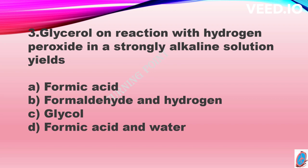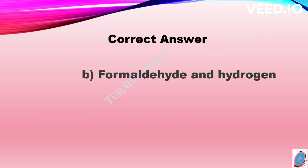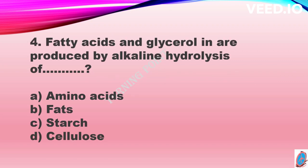Let's move on to the next question. Fatty acids and glycerol are produced by the alkaline hydrolysis of option A amino acids, option B fats, option C starch, and option D cellulose. The correct answer is option B, fats.